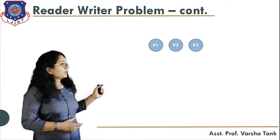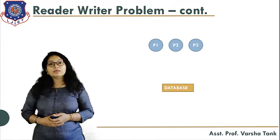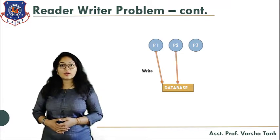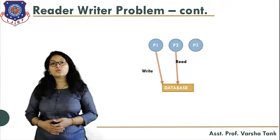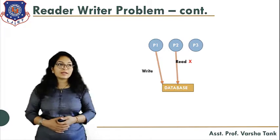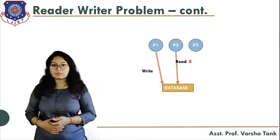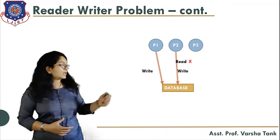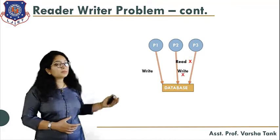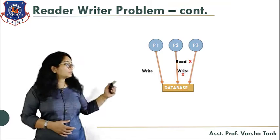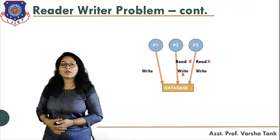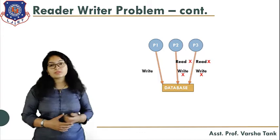For example, suppose three processes share one database. If process P1 is writing, then process P2 wanting to read the database will not be allowed, because one process is already writing. Similarly, P2 will not be allowed for write operations either. For process P3 as well, no read and no write is allowed because P1 is writing on the database — we cannot allow any read or write operations for these processes simultaneously.